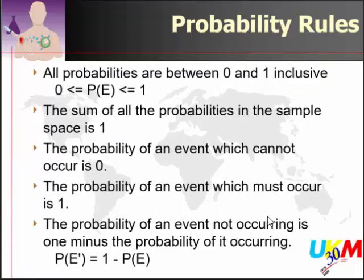The probability of an event which cannot occur is 0 — for example, the probability of Dr. Azmi marrying a second wife is zero, because you marry two, you die. The probability of an event that must occur is 1 — for example, will Dr. Azmi die? Yes, because we are all human. Therefore, the probability of an event not occurring is 1 minus the probability of it occurring.